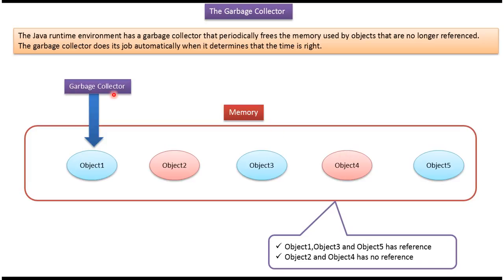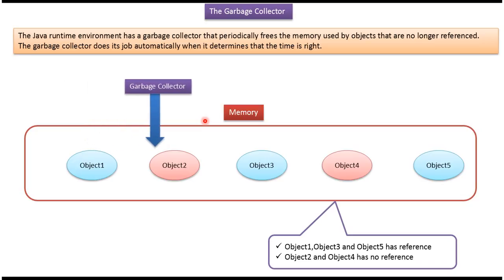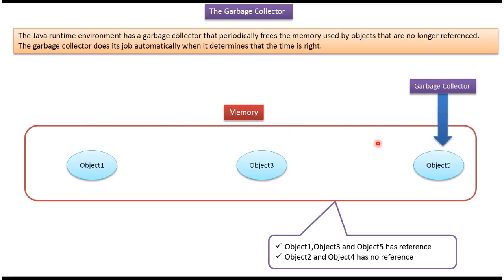And here you can see Garbage Collector. What the Garbage Collector will do is it will keep on monitoring the memory. And if it finds any object that does not have any reference, then it will remove it from the memory. And now you can see the Garbage Collector has removed 2 objects — Object 2 and Object 4 — because both objects do not have any reference.